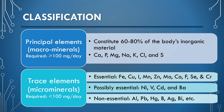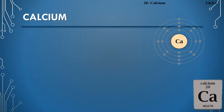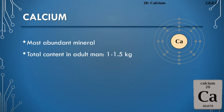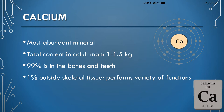Calcium is the most abundant among the minerals in the body. The total content of calcium in an adult man is 1 to 1.5 kilograms. Out of that, 99 percent is present in the bones and teeth, and a very small fraction — 1 percent — is present outside skeletal tissue, which is very important for performing a variety of functions.